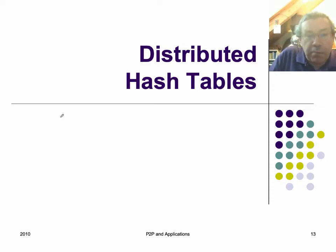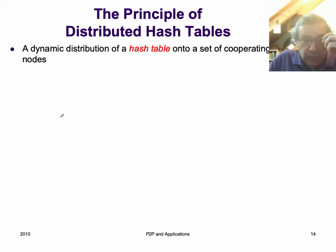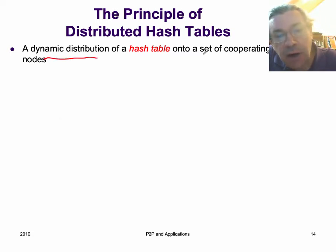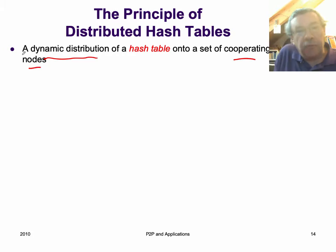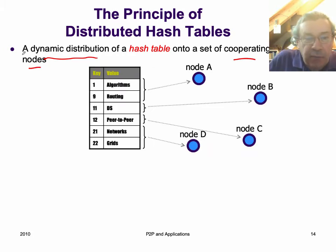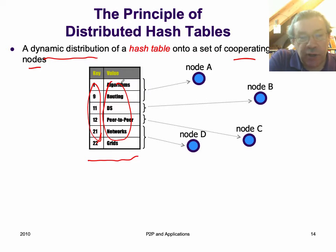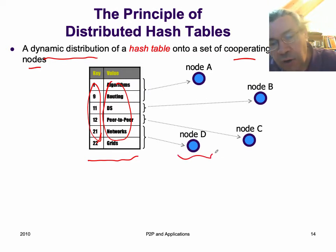We first introduce the principle of distributed hash tables. A distributed hash table is actually just a hash table distributed dynamically onto a set of cooperating nodes. Here's a hash table — on the left, we can see a hash table with keys and values. Hash tables could be stored on one machine, but here we're storing the hash table on a set of nodes.